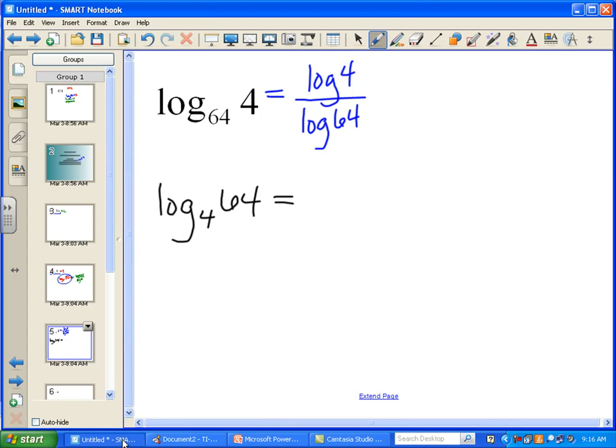So, in the meantime here, let's use the change of base formula on this. This is log 64 over log 4. And again, we know what this answer is. This answer is 3, because 4 to the third power is 64.